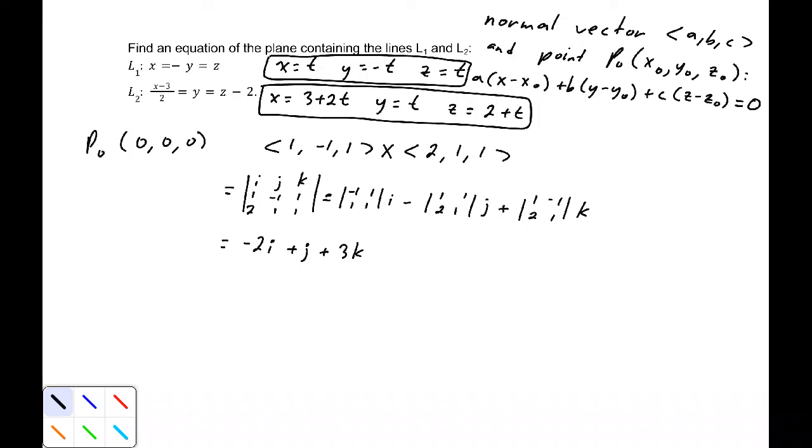So our normal vector, I'm just going to call it n, is the vector (-2, 1, 3).